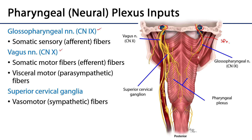The vagus nerve descends on both sides and sends out a pharyngeal branch. That pharyngeal branch conducts somatic motor fibers, or efferent fibers, to the pharyngeal plexus. So the glossopharyngeal nerve is the somatic sensory or afferent provider to the plexus, while the vagus nerves are the somatic motor or efferent provider. In addition, the vagus nerves also transmit visceral motor — specifically parasympathetic — fibers to the plexus.